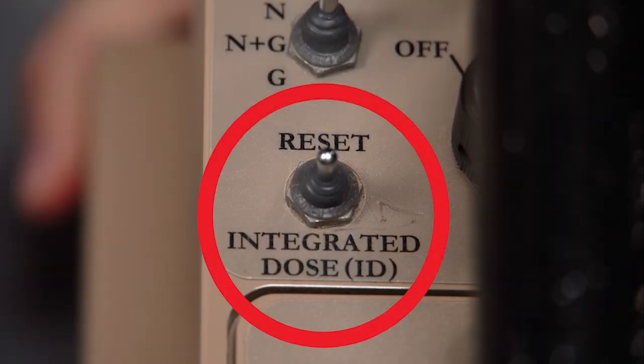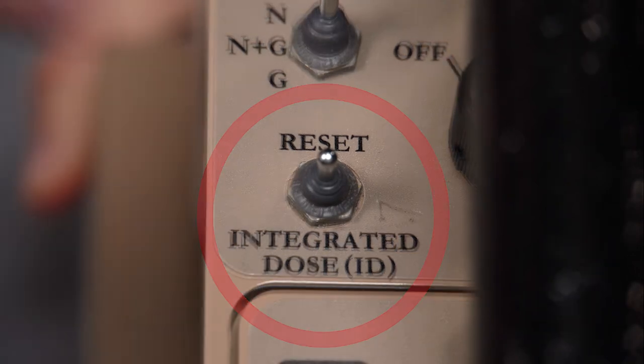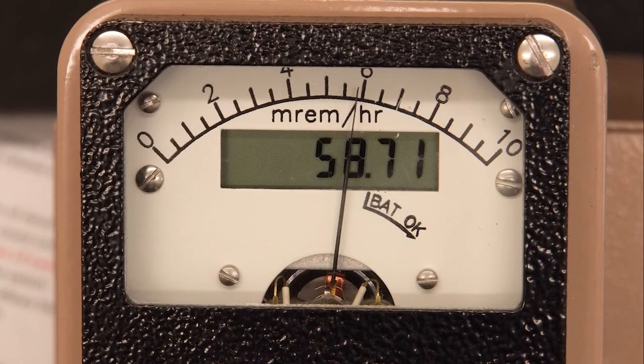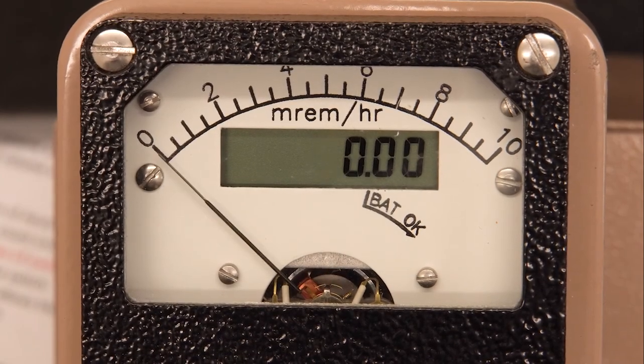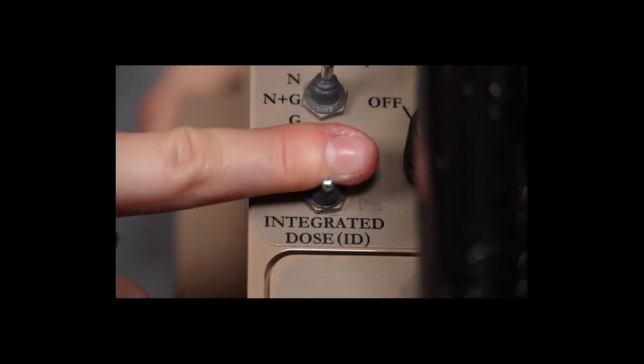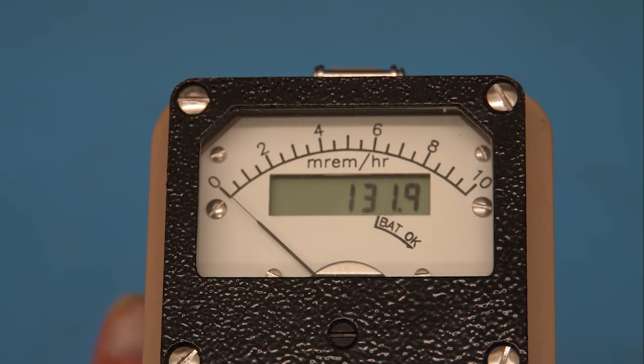A dual-position momentary toggle switch labeled Reset and Integrated Dose. When the Reset position is selected, this switch provides a rapid means of driving the analog rate meter to zero. When the Integrated Dose position is selected, it reads out the integrated dose.